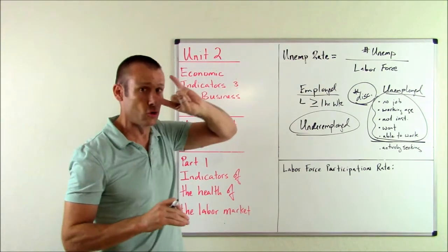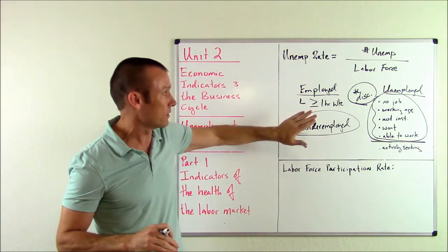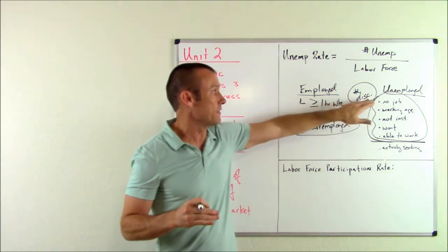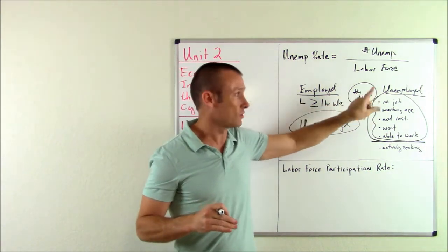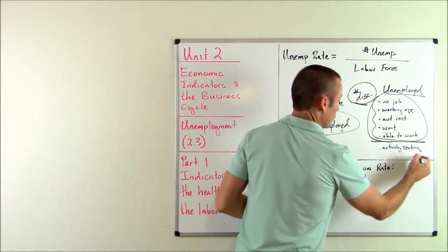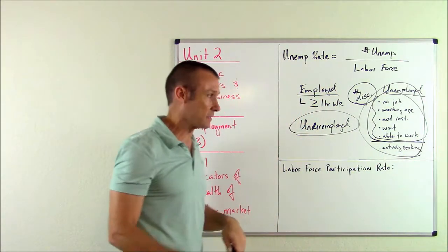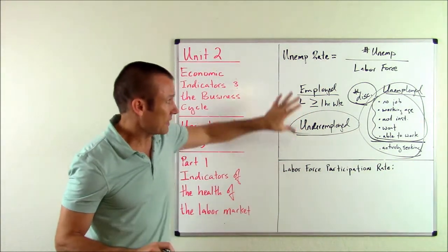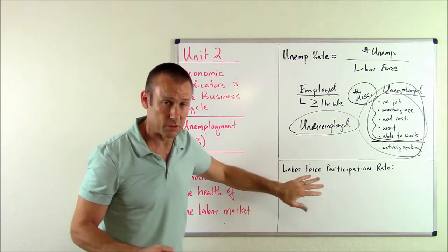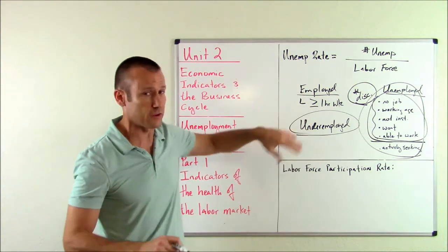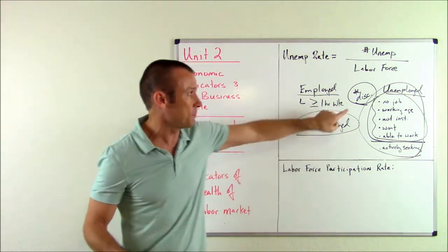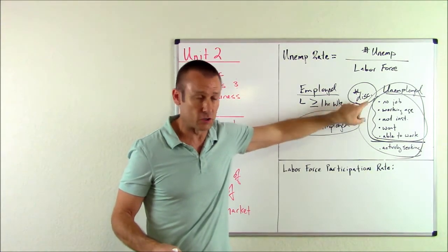So when it comes to the unemployment rate, there are two big issues. The underemployed are counted as employed — that's all they are. And discouraged workers are not counted as unemployed at all. To be unemployed you must meet the entire list of criteria. That's why many economists say you need to also look at the labor force participation rate alongside the unemployment rate to get a much fuller picture, and this helps address the issue of the discouraged worker.